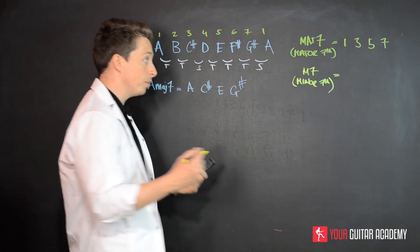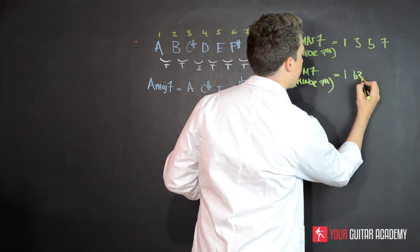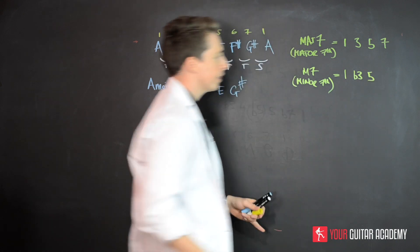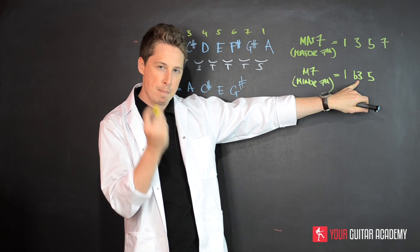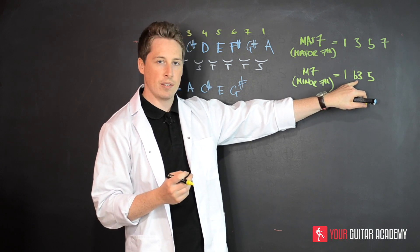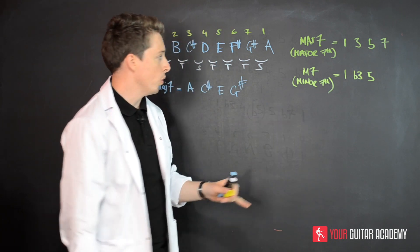So what's the minor triad? Well, the minor triad is quite simply the one, a flat three and a five. So those together, remember, that flat three really creates that minor sound. The one and the five complete the chord.